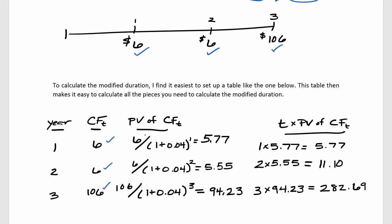The next column I like to do is discount each one of these cash flows back to today. That first six dollar cash flow is discounted back one period at the four percent rate, the second six dollar cash flow is discounted back two periods, and the final cash flow of 106 dollars is discounted back three periods. This gives us 5.77, 5.55, and 94.23.